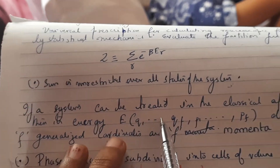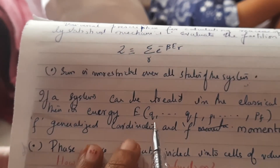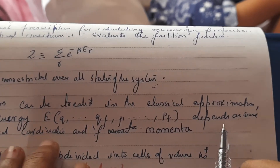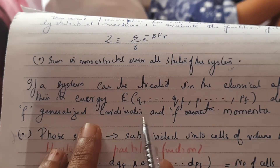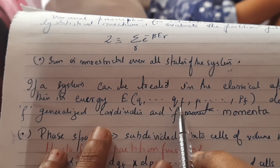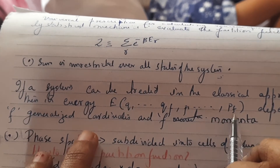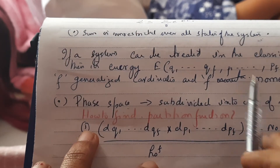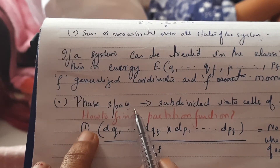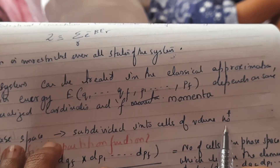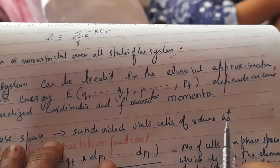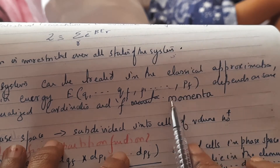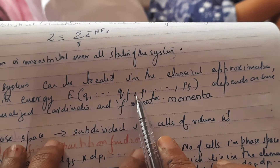Now, if a system can be treated in the classical approximation, its energy depends on some generalized coordinates q1, q2, ... q_f and f momenta p1, p2, ... p_f. Since we are talking about momentum and coordinates, we talk in terms of phase space. The phase space is subdivided into cells of volume h_0 raised to f, because there are f momenta and f coordinates. The momentum space is six-dimensional.